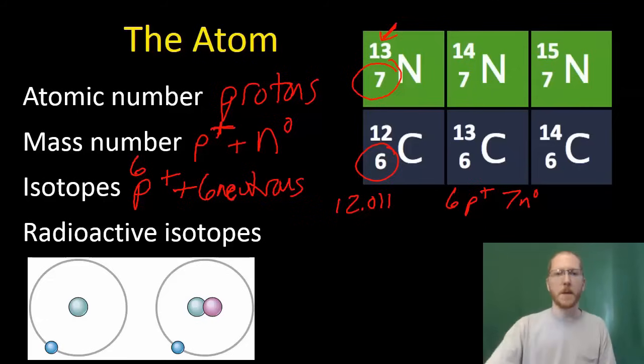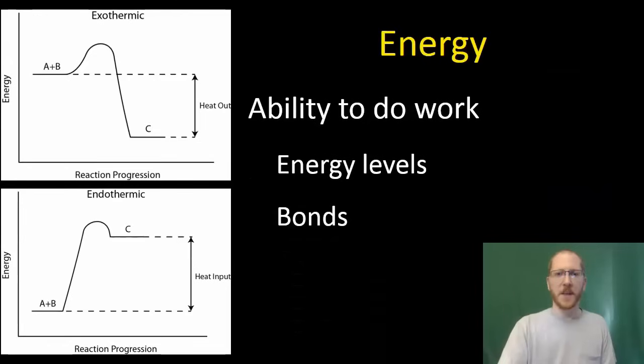For our purposes, just remember, atomic number is protons, mass number is protons and neutrons. We can vary the number of neutrons, which becomes very important later on, because some of these isotopes will be radioactive, and we can use that to help figure out the age of things. We care a lot about the fact that there are these isotopes that are radioactive.